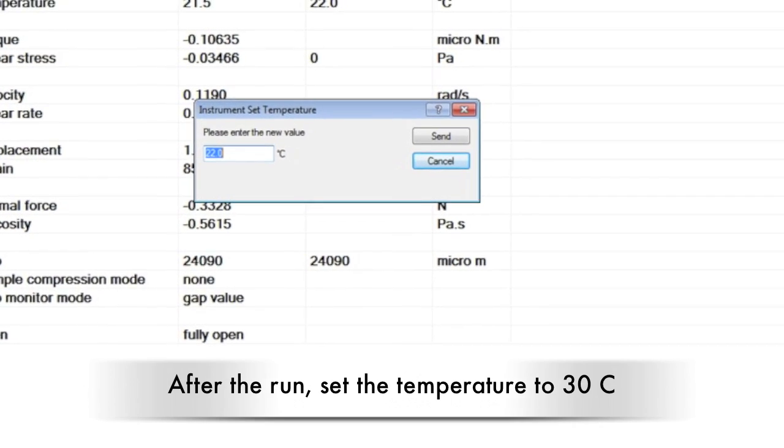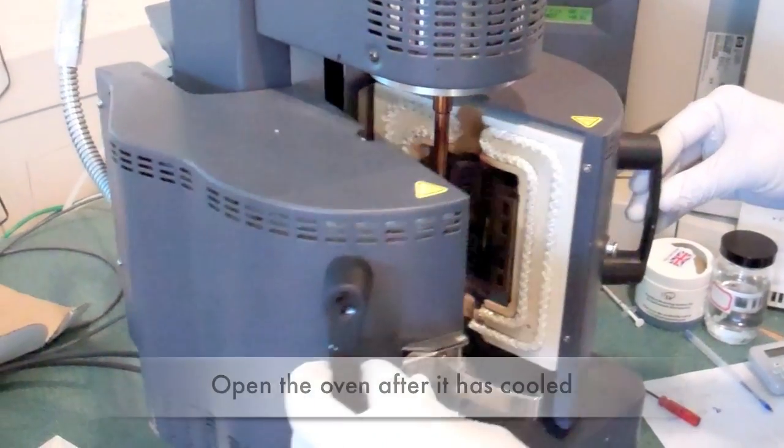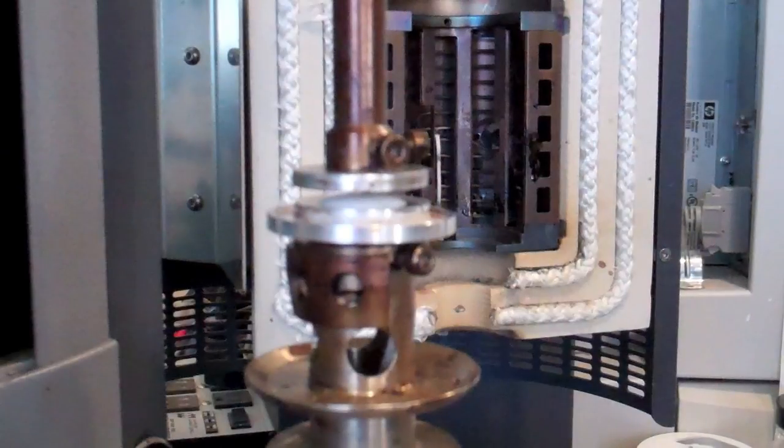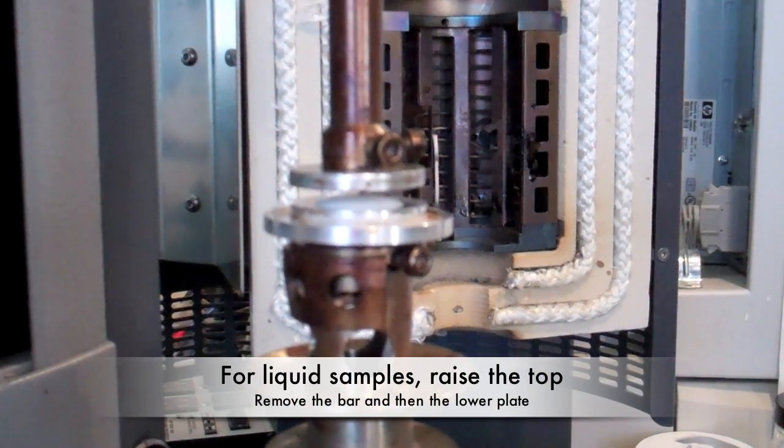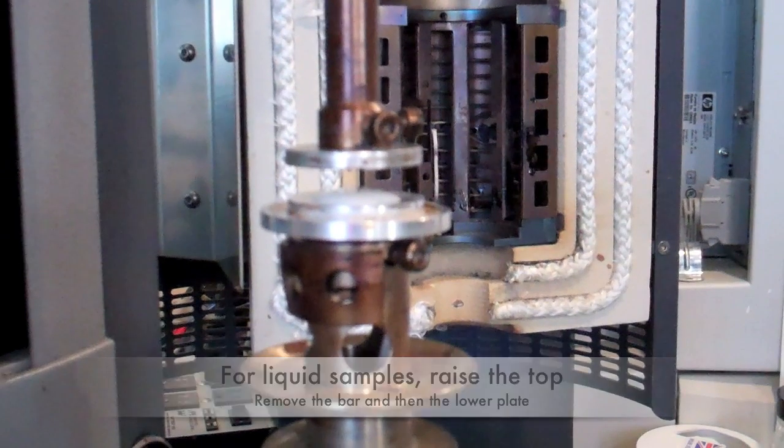When the run is finished, set the temperature to 30 degrees C. After the instrument is cooled, open the oven doors. For liquid samples, raise the top plate a few centimeters and remove the bar using the screw on the top of the machine. Remove the plates by loosening the screws.